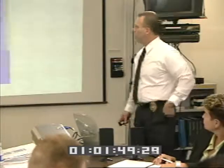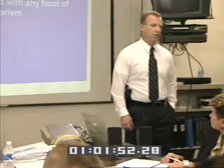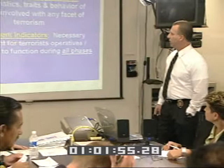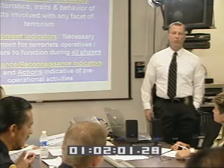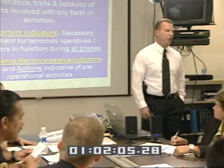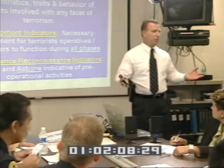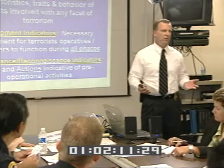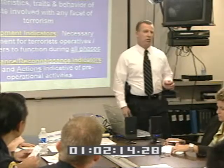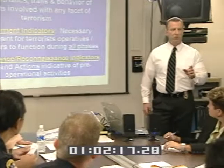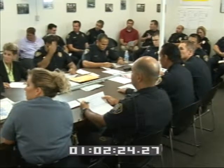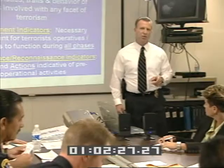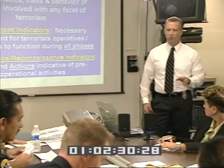Looking at the form, you'll see three columns: human behavioral indicators, equipment indicators, and surveillance reconnaissance indicators. We're going to view a video scenario based on a true incident — a traffic stop, something we do every day. As you watch, proactively list all human behavioral indicators in column one, equipment indicators in column two, and surveillance reconnaissance indicators in column three.